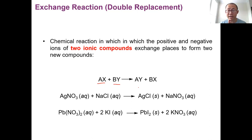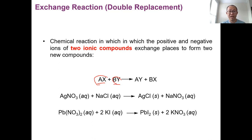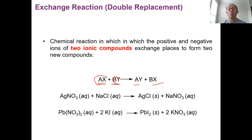If you forgot about ionic compounds, pause the video and go to Chapter 5. The ionic compound can be represented as AX and BY — positive, negative, positive, negative. After the reaction, they swap or exchange. A was with X, and after that A is with Y. B was with Y, and after that B is with X. So AX + BY becomes AY + BX. The positive is still positive; it's just that the positive and negative swap. So this reaction is called a double replacement reaction.